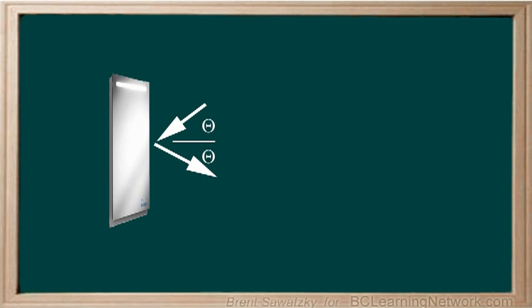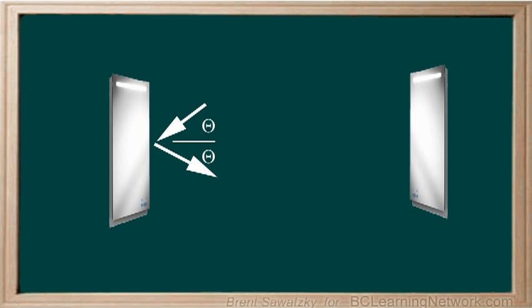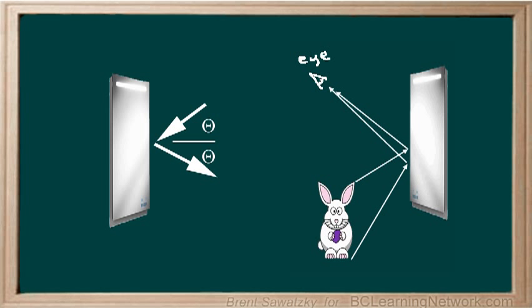Hint number two, when working on a problem where you're asked about what a person might see, remember to start the rays at the object and end at the person's eyes. Remember that viewing is simply detecting the light that has been reflected off the item we're looking at.